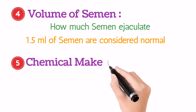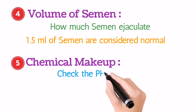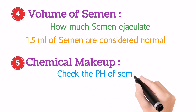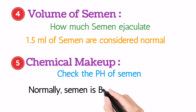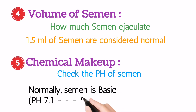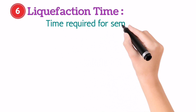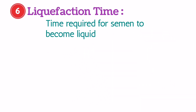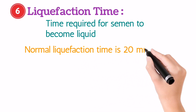Fifth, chemical makeup. You should also check the pH of the semen — that is, the acidity and basicity of the semen. Normally, the semen is basic in nature. Sixth, liquefaction time. The time taken by the semen to convert into liquid is called liquefaction time, and the normal semen only takes 20 minutes to liquefy.